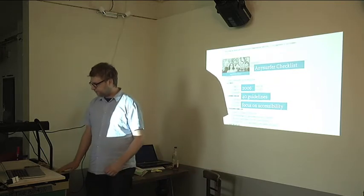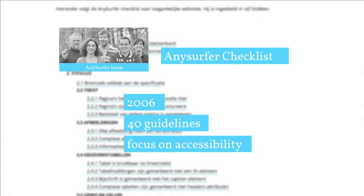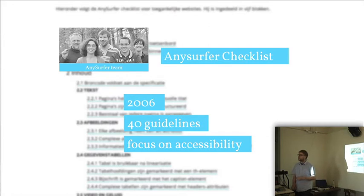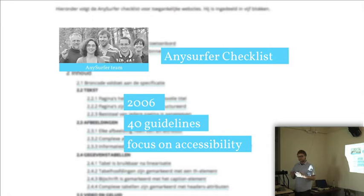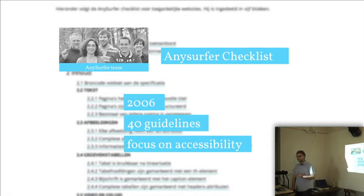Some others that I rediscovered — for example, AnySurfer. AnySurfer is a label from Belgium, from the organisation Broeders van Licht en Liefde, and it's a real focus on accessibility. They are focused on people who are visually impaired, and these are about 40 guidelines which really correspond to the WCAG standards as well on accessibility for visually impaired people. 40 guidelines — really useful stuff.